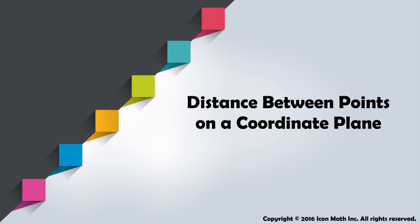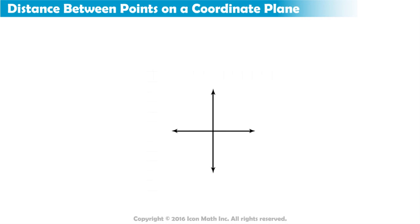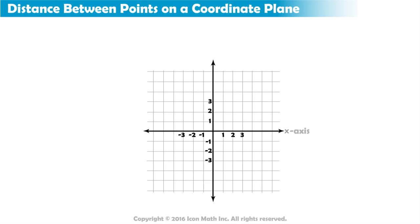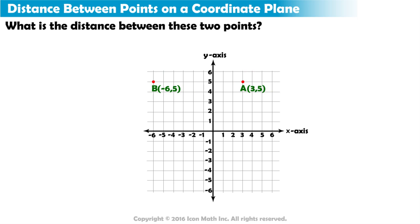Distance between points on a coordinate plane. In this graph, we have two ordered pairs plotted: point A, 3, 5, and point B, negative 6, 5. What is the distance between these two points?